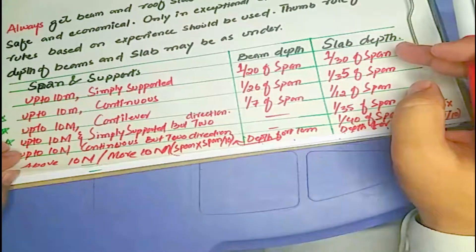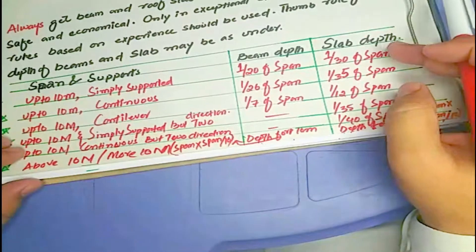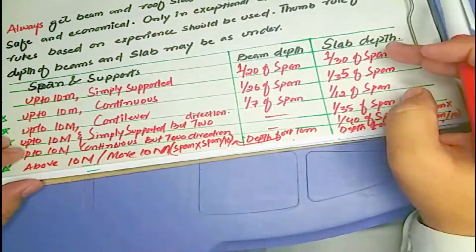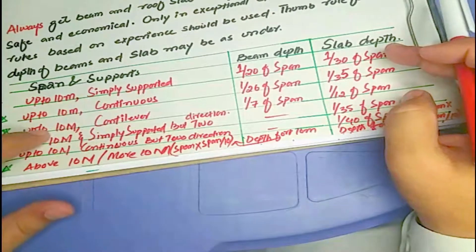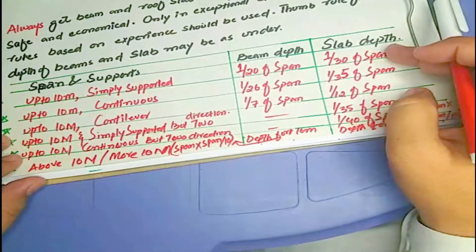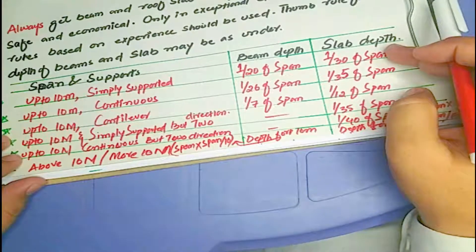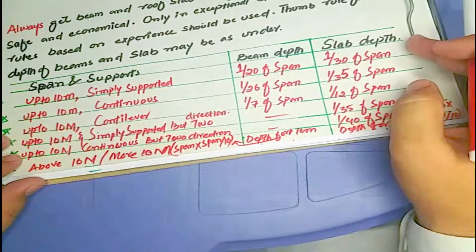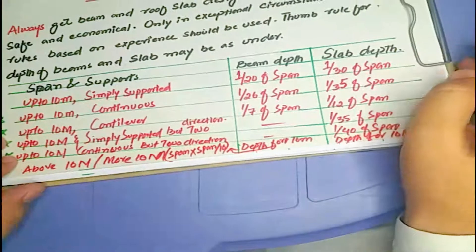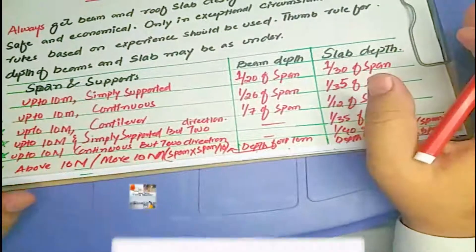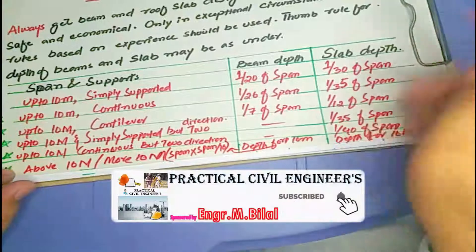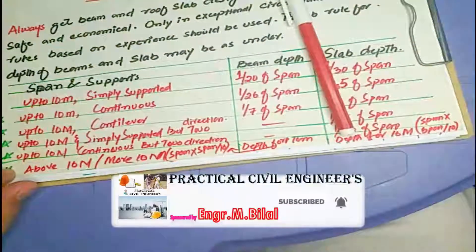That covers the thumb rules for finding the depth of beams and slabs for different support conditions and different span lengths. If you like the video, kindly subscribe to the channel and keep watching. Thank you.